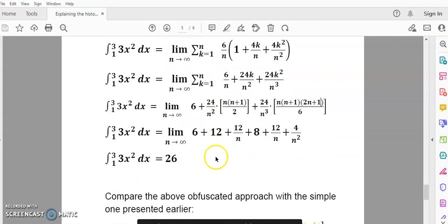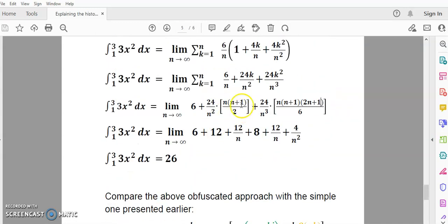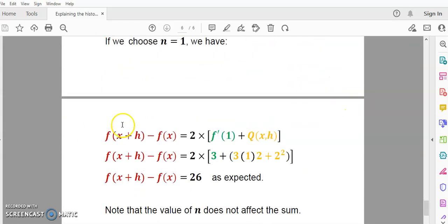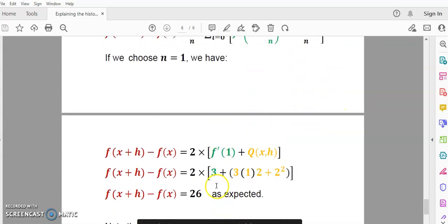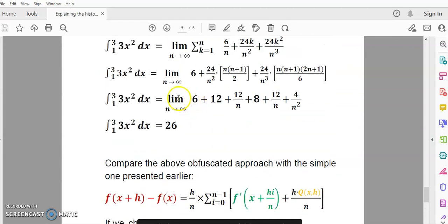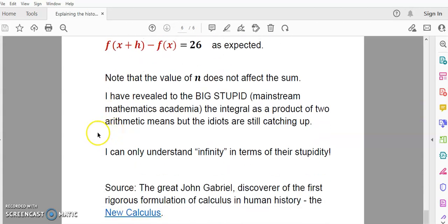So compare the above obfuscated rot with this simple approach that I showed you. In about five lines you have the same and you don't have to learn all this garbage theory which is flawed, hard to understand, obfuscated and full of ill-formed concepts.